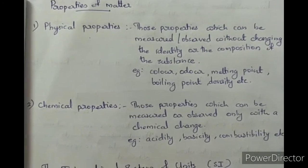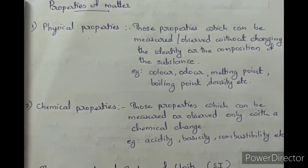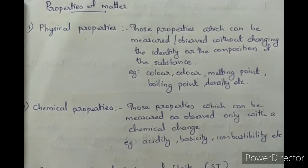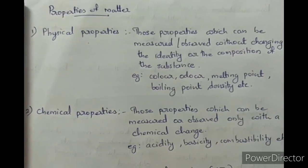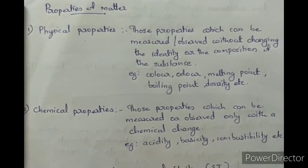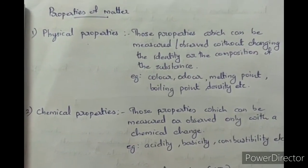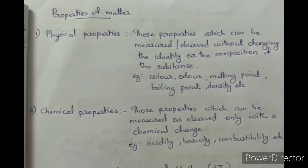There are two types of properties for matter. The first one is physical properties and the second one is chemical properties.